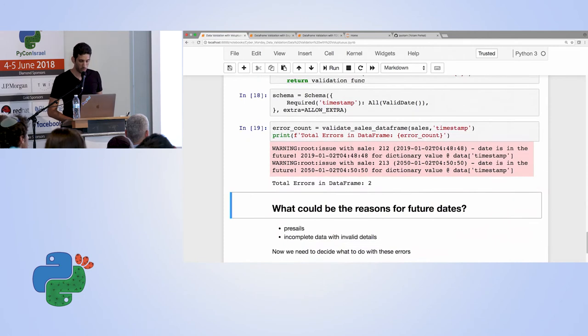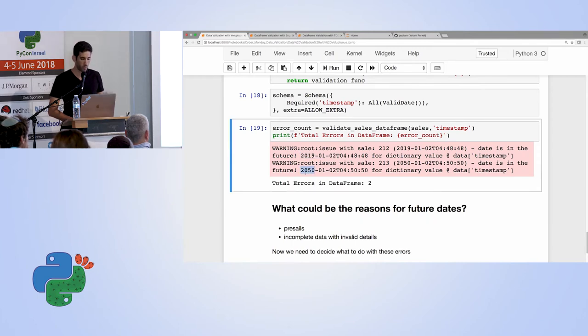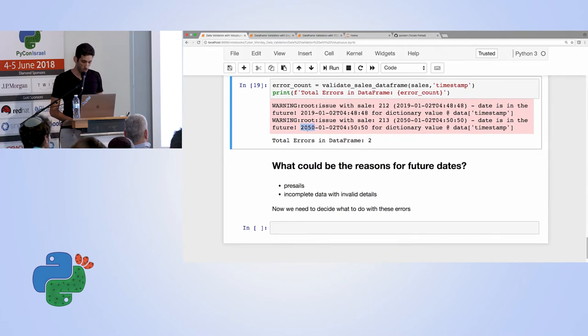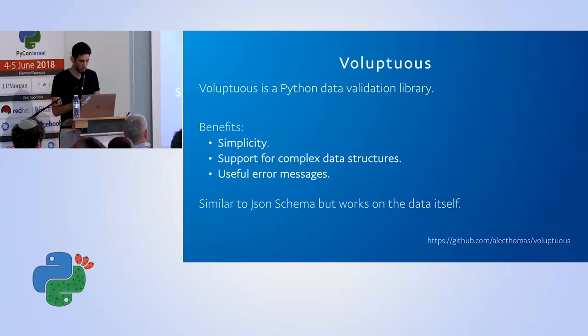And again, we run it. And we see that two items have produced errors. So one of them is pretty close in the future. And one is 2050. It's like 30 years in the future. So again, there could be several contributing factors to these errors. But we need to decide and see whether maybe it's a pre-sale that we entered into the system. But the payment won't be received until 2019. But if I see something like 2050, then something is suspicious here. Okay, so that was Voluptuous. Again, pretty intuitive use. And we can create our own validators, which is a very strong capability.